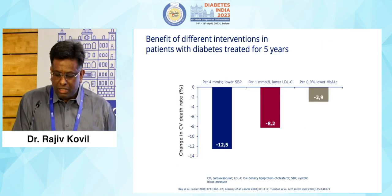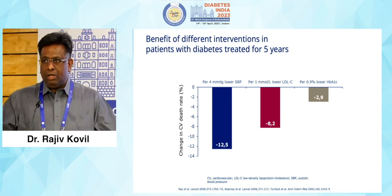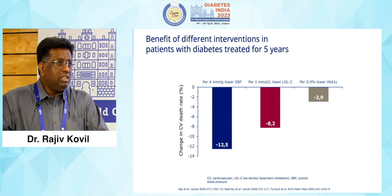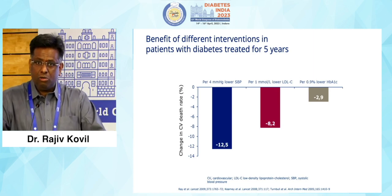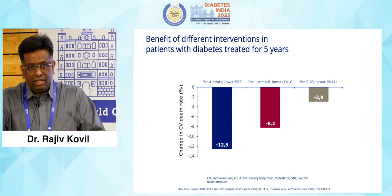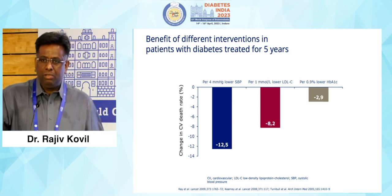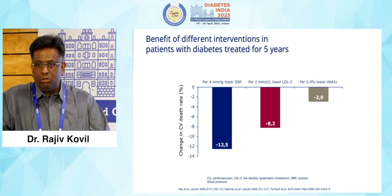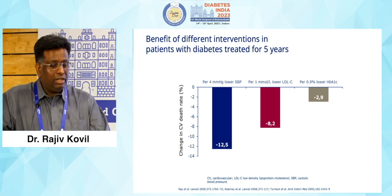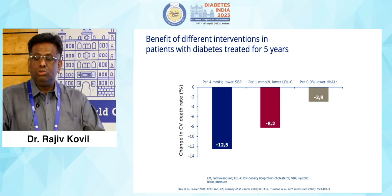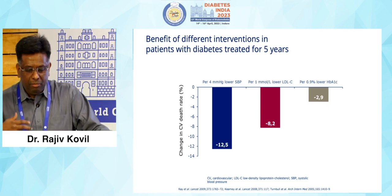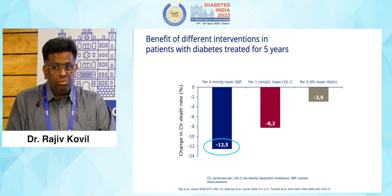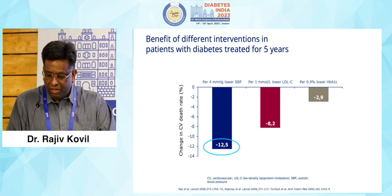Systolic blood pressure is a key risk factor for cardiovascular disease. A 2009 paper on intervention in people with diabetes showed that blood pressure intervention has a much better impact on cardiovascular death compared to LDL or HbA1c. A JAMA paper published four years ago asked: if a patient has blood pressure, dyslipidemia, and high blood glucose, which do you treat first? The answer is always hypertension — because hypertension is a more rapid killer in the shorter term compared to dyslipidemia or hyperglycemia.